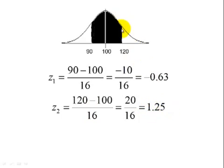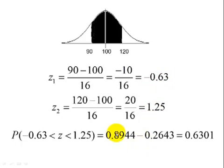Now to find the area in-between, we look up the area to the left of 1.25, write that probability down. We look up the area to the left of a negative 0.63, write that probability down, and subtract the two probabilities. And we end up with 0.6301. So to answer the question, the percentage of IQ scores between 90 and 120 is about 63%.